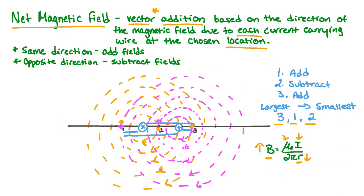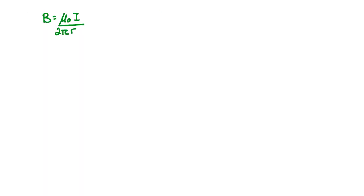Now let's look at the force per unit length between two parallel conducting wires. To determine the force per unit length, we need to recall two equations. First, the magnetic field around a current-carrying wire, B, is equal to the magnetic permeability mu-naught times the current I divided by 2πR, where R is the distance from the wire.